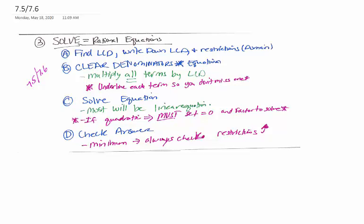Find the LCD, just like we did in the last sections, and we're going to write down the LCD. But the key new step is we're going to also write down restrictions, which is tied back to section 7.1 with our domain.